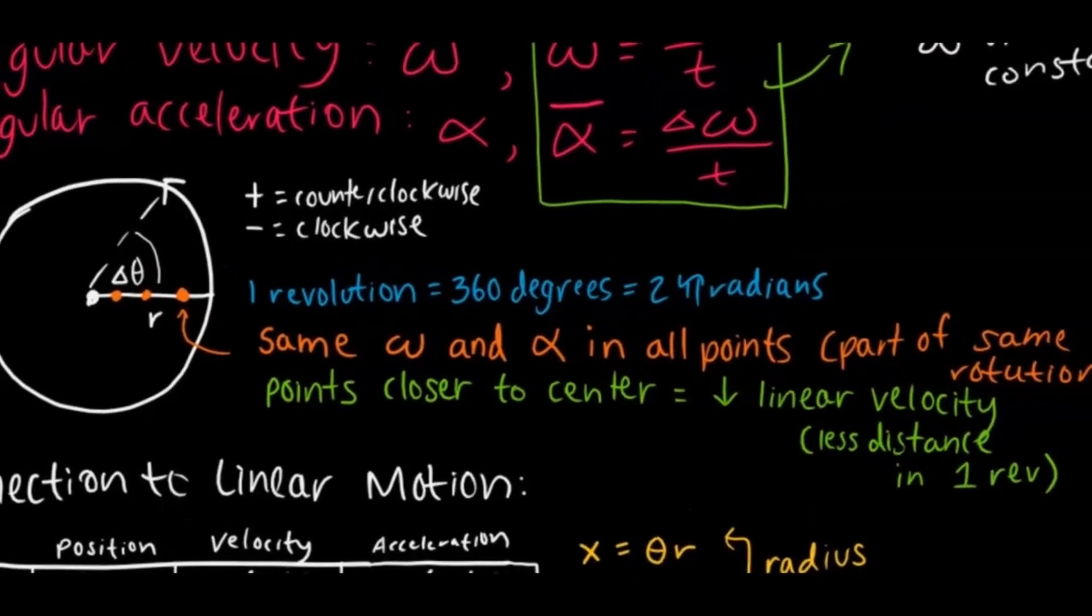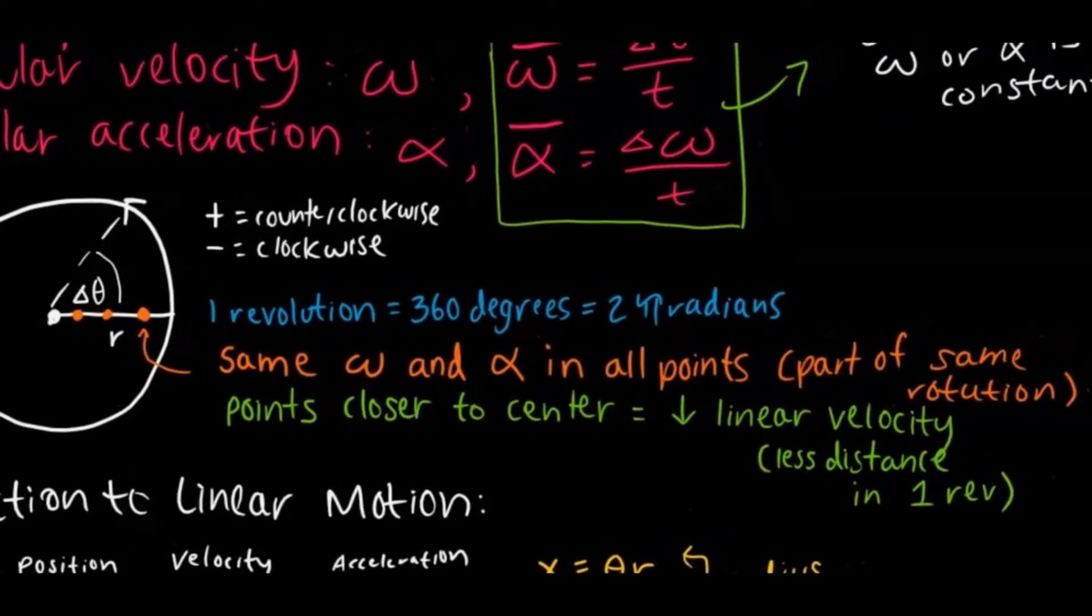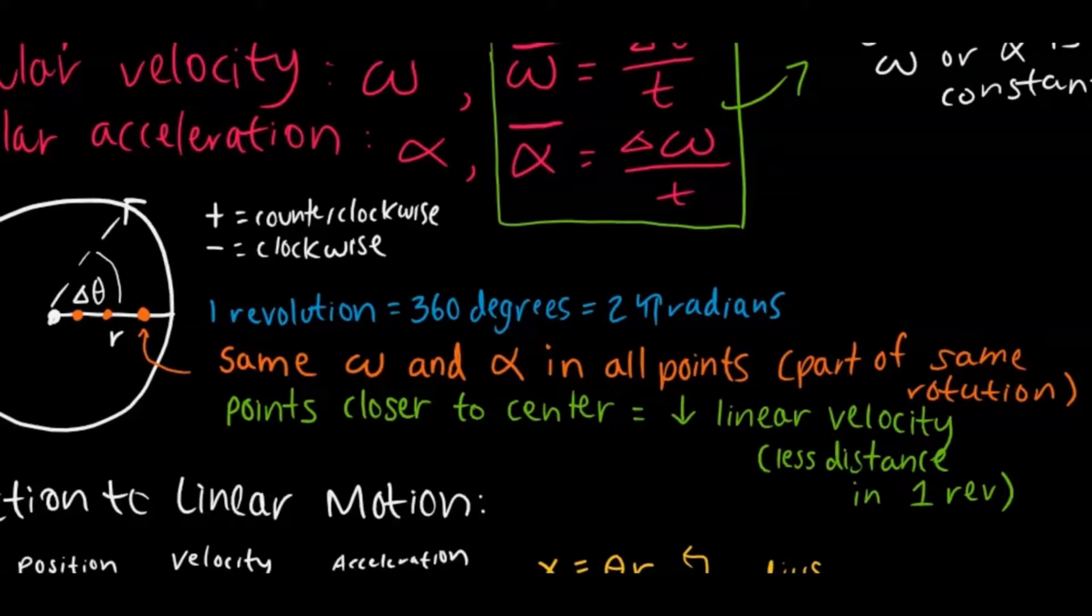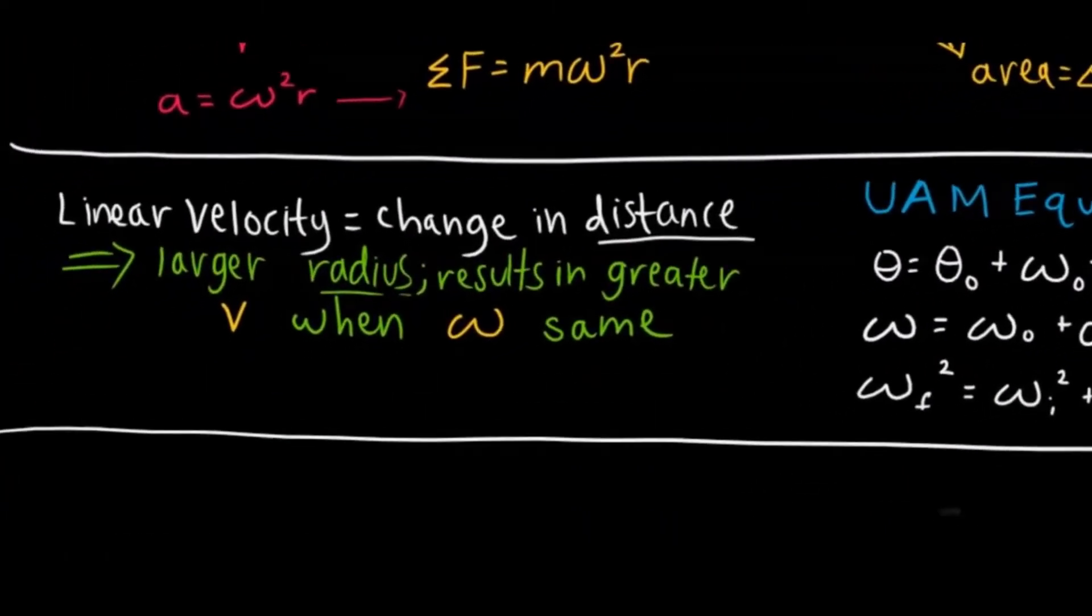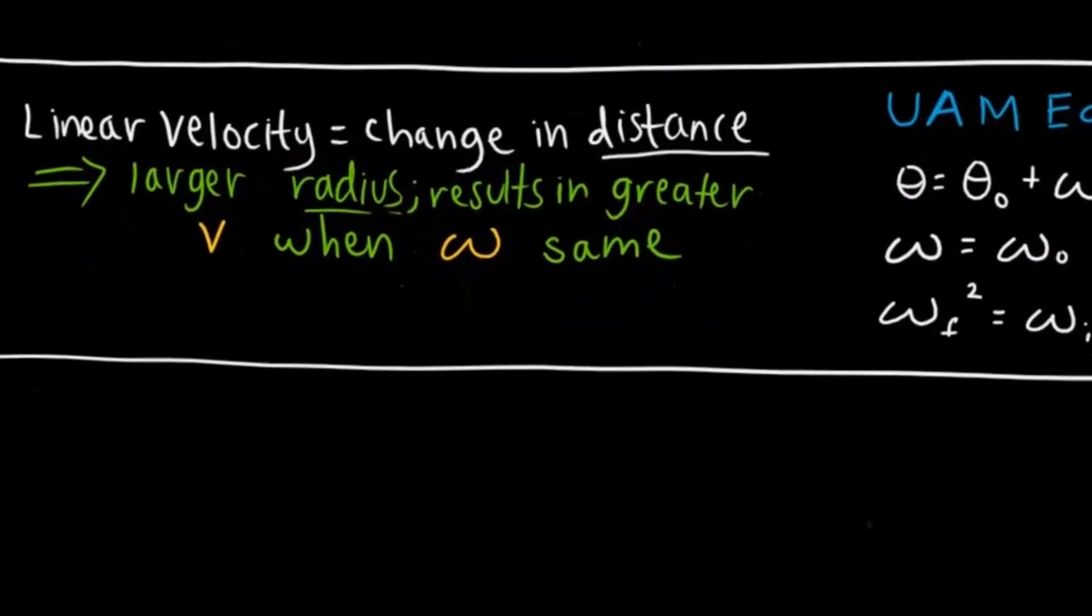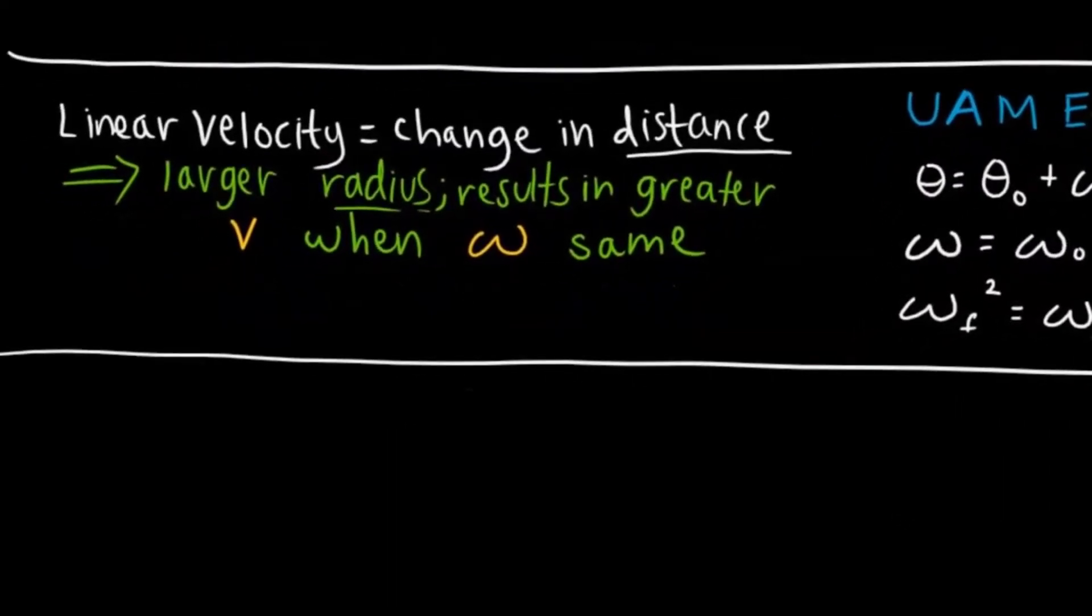Another thing to know is that there is the same angular velocity and acceleration for all points of the same rotation. Another thing is that points that are closer to the center have a decreased linear velocity. There's less distance in one revolution. That is because linear velocity corresponds to the change in distance. If you think about it, if you have a larger radius, it's going to result in a greater change in distance when the rotation rate is the same.